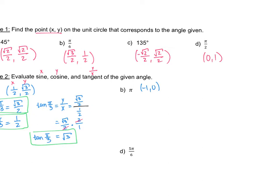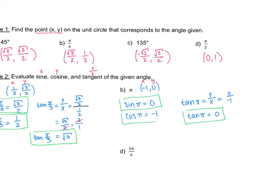So x is negative 1 and y is 0. That tells me sine of pi is 0 because that's the y value, and cosine of pi is negative 1. For tangent of pi, that's y over x, which is 0 over negative 1. Any time 0 is in the numerator, the result is 0. So tangent of pi equals 0.